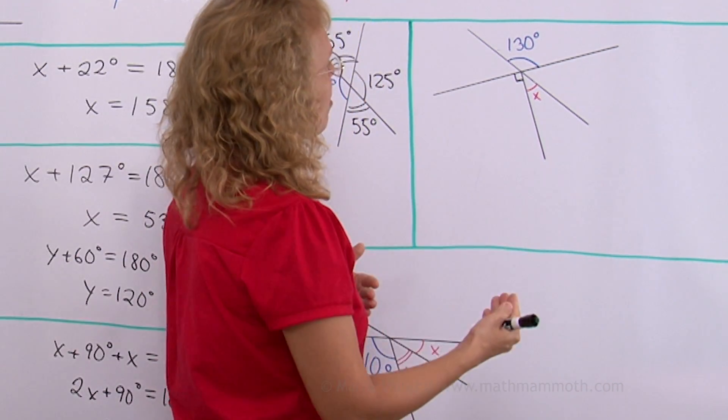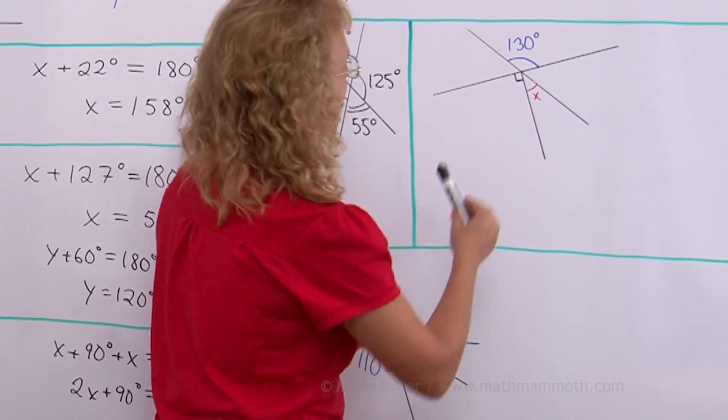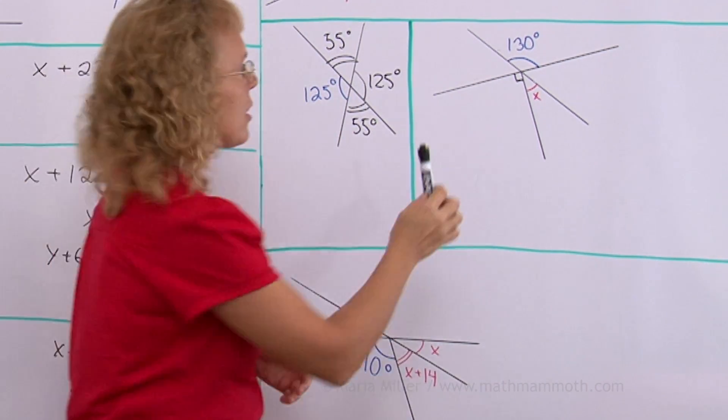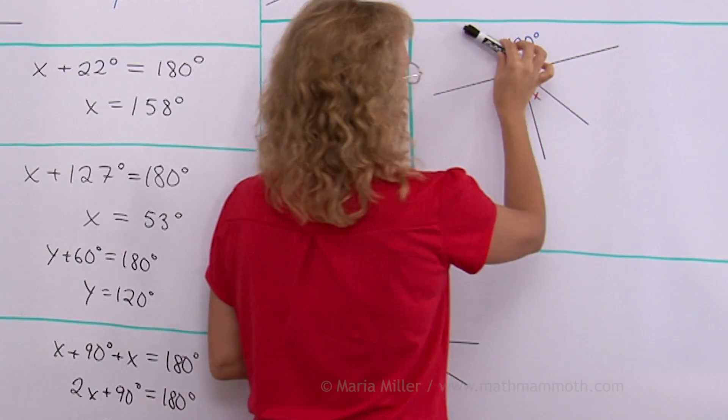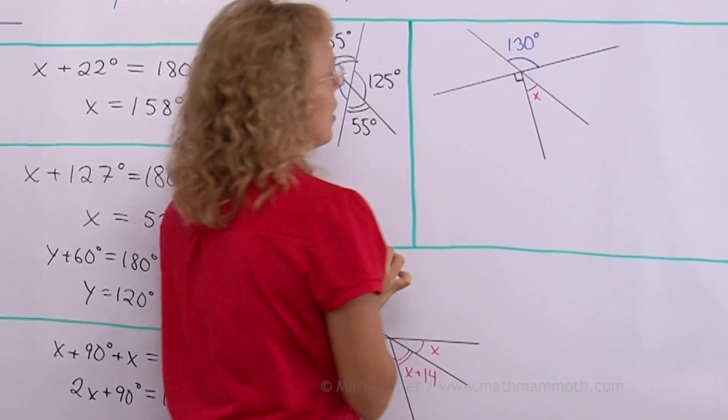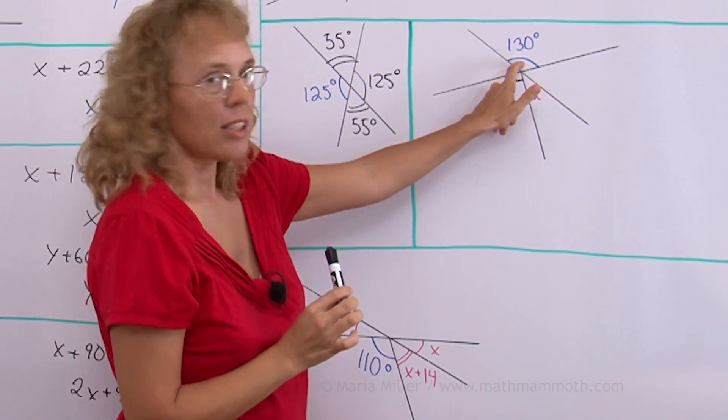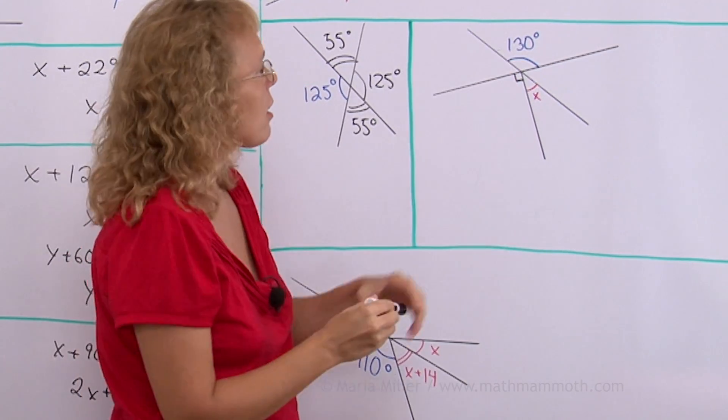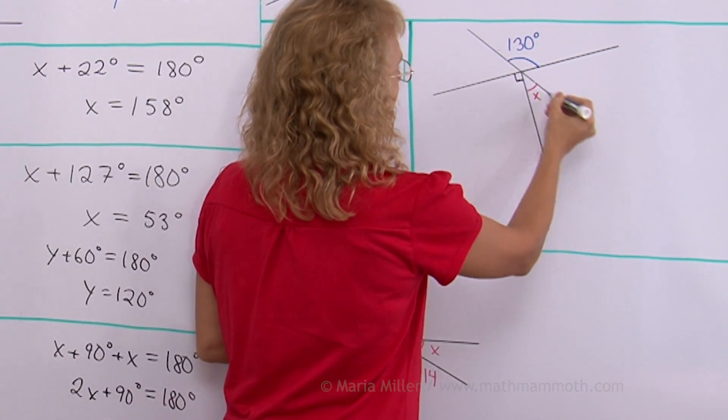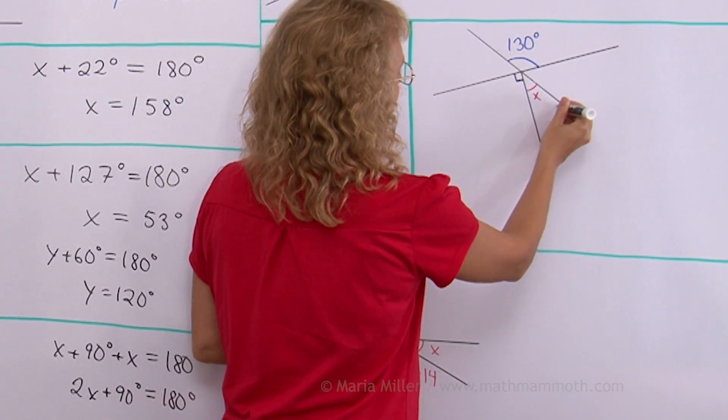Now what principles could I use here? First of all I can notice that there are two lines that are intersecting. This here and this here. So this 130 degree angle it has a vertical angle here too. It is between this and this. In other words over here.